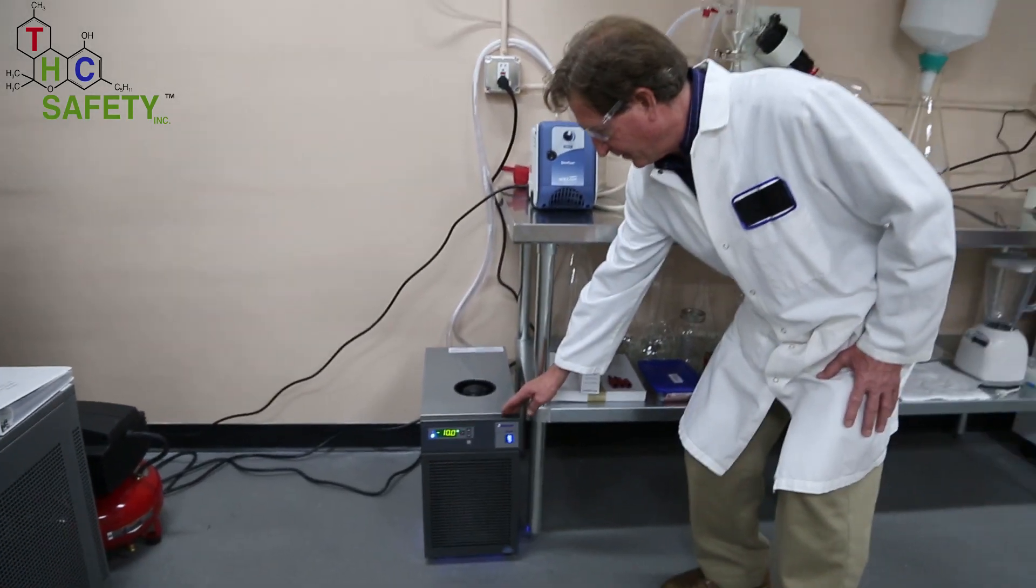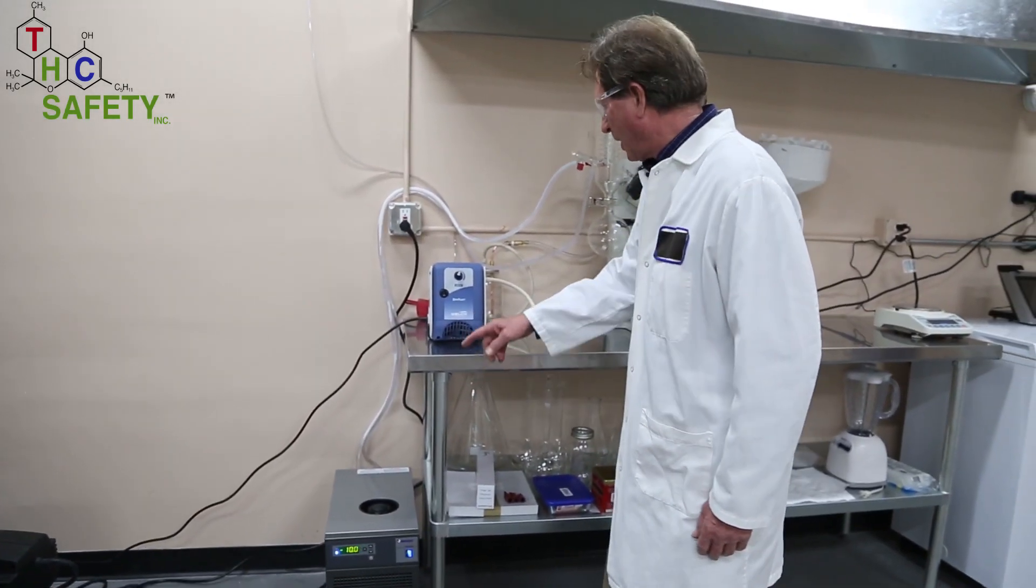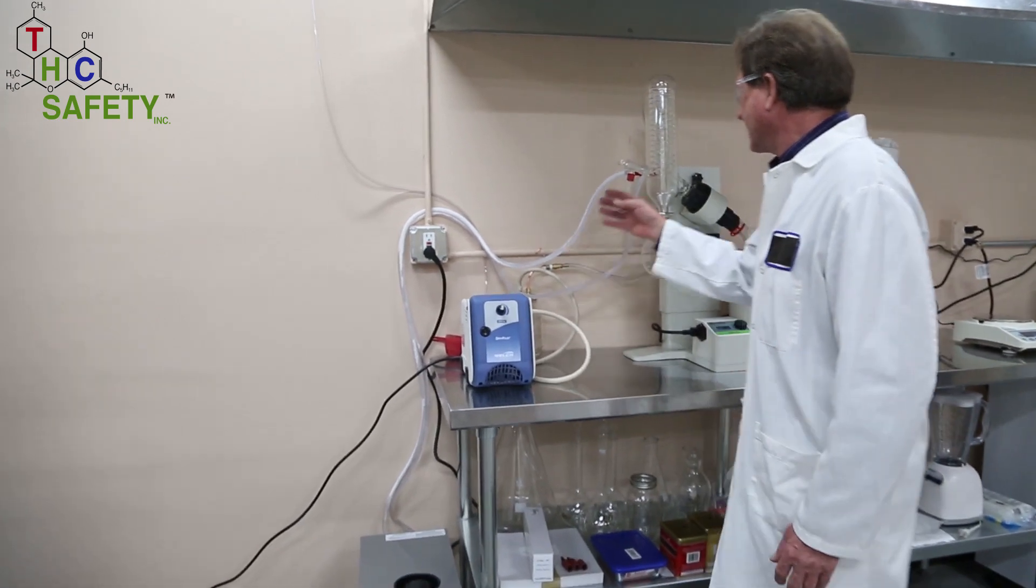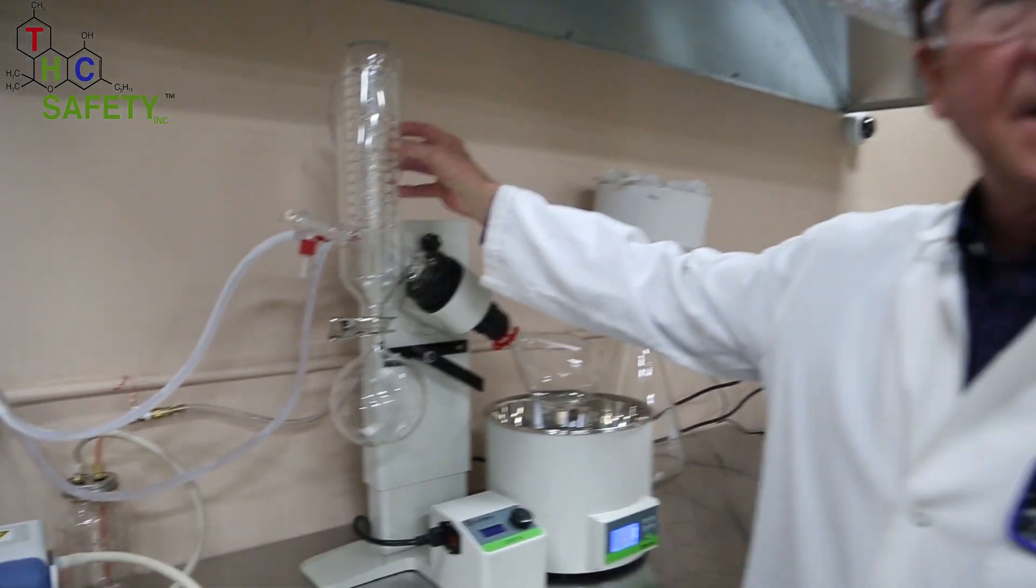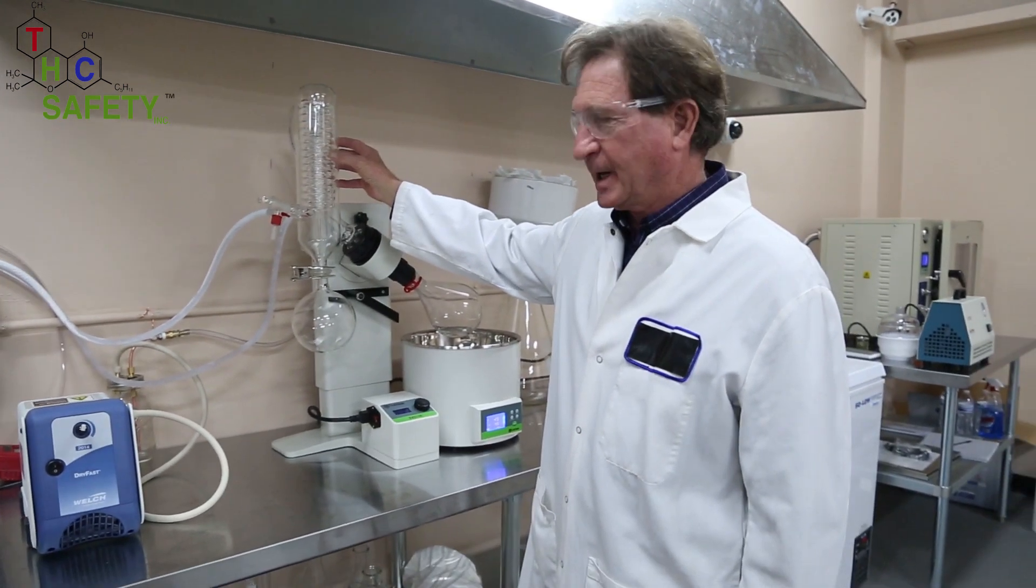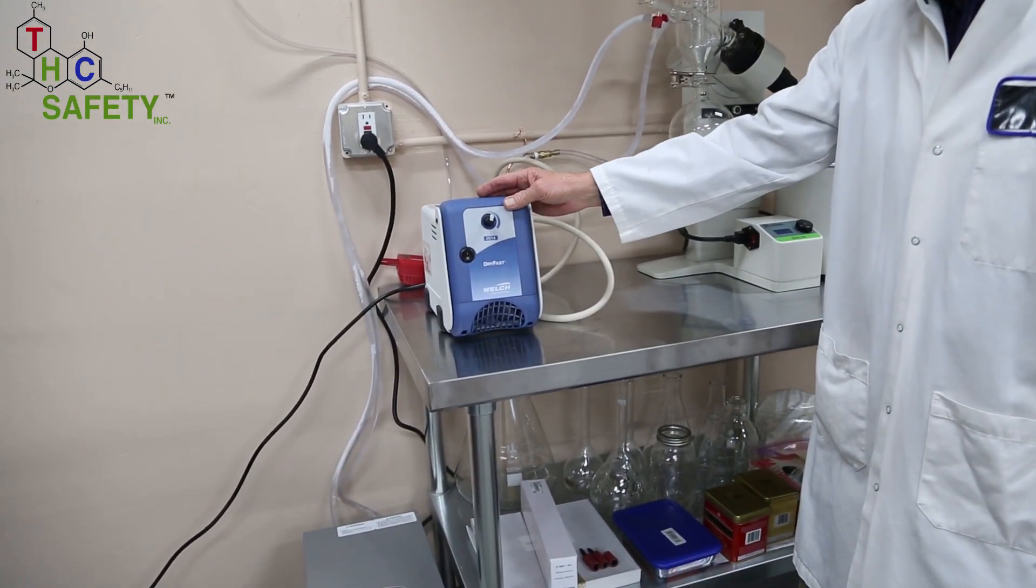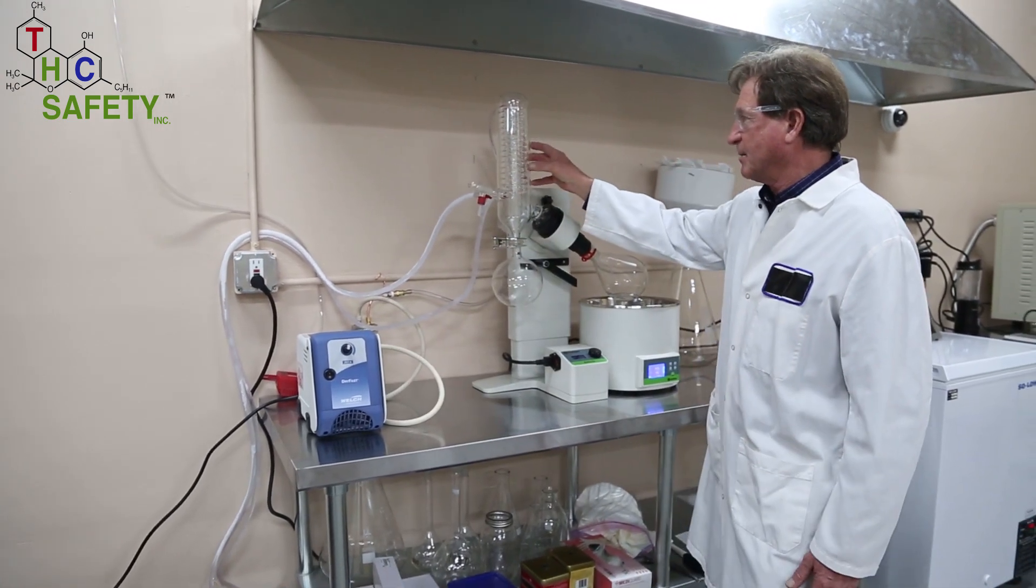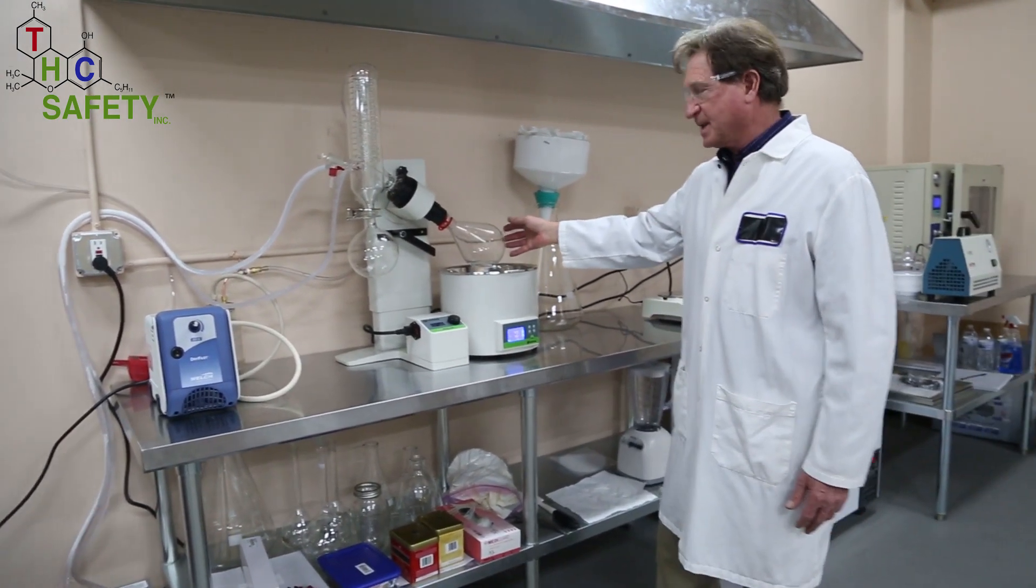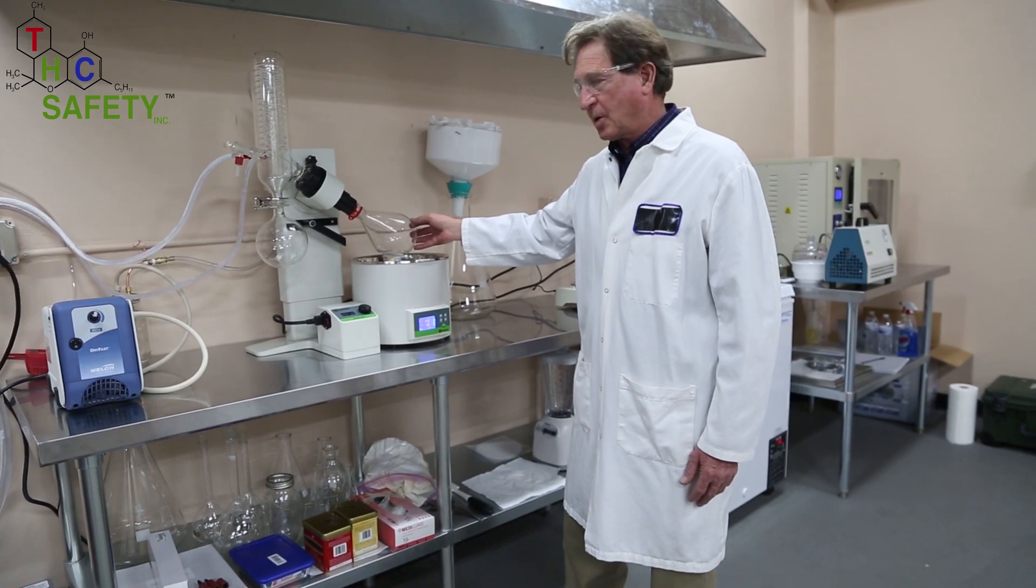This chiller is providing chilled water through these hoses to this coiled condenser to change the vapor into a liquid. We're using this vacuum pump to reduce the pressure in this system so that the ethanol boils at a lower temperature.